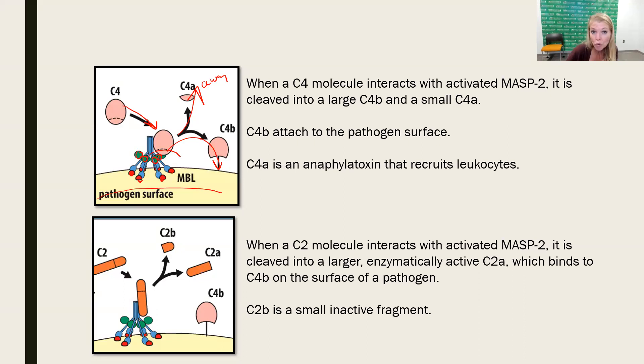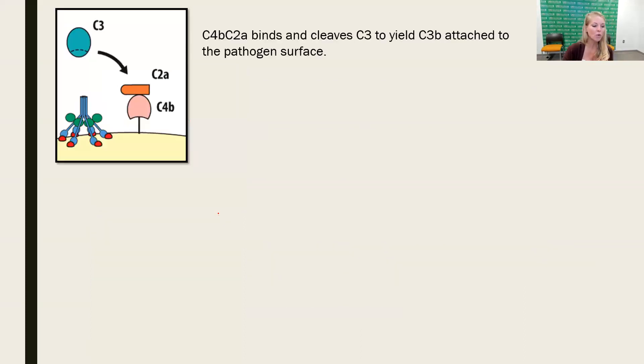Then molecule C2 will come in and interact with MASP2, which again are active serine proteases, and will cleave C2 into C2A and C2B. This is the one time that it's going to be slightly different. C2A now is going to be the protein that stays and interacts with C4B, and C2B is going to go away. We can say it goes bye-bye. C4A is going to go away, and C2B is going to go bye-bye. C2A then will interact with C4B.